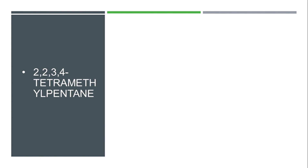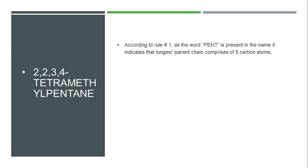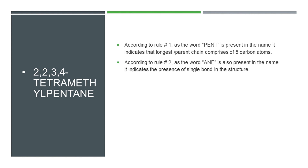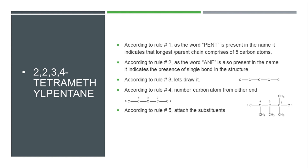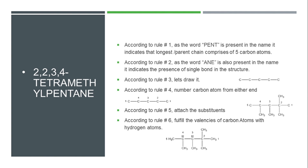The next part is 2,2,3,4-tetramethylpentane. The phrase 'pent' indicates 5 carbon atoms and 'ane' indicates single bonds. When we draw and number the carbon skeleton according to rules 3 and 4, we then attach four methyl groups at positions 2, 2, 3, and 4 according to rule 5. We then fulfill the remaining valences of all carbon atoms with hydrogen atoms.